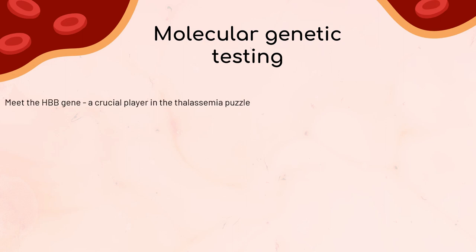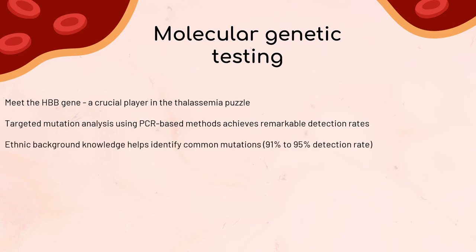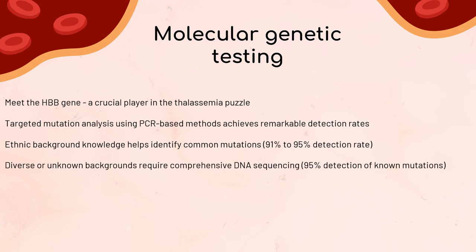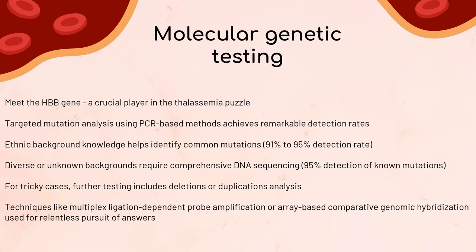Molecular genetic testing targets the HBB gene. PCR-based targeted mutation analysis is our first stop; if the individual's ethnic background is known, we can identify the four to six most common mutations, achieving a detection rate of 91% to 95% in Mediterranean, Middle Eastern, Thai, and Chinese populations, and 75% to 80% in African and African-American populations. For diverse or unknown ethnic backgrounds, comprehensive DNA sequencing of the HBB gene can detect approximately 95% of known mutations. If sequencing fails to reveal the mutation, further testing such as deletions or duplications analysis using multiplex ligation-dependent probe amplification (MLPA) or array-based comparative genomic hybridization is deployed.